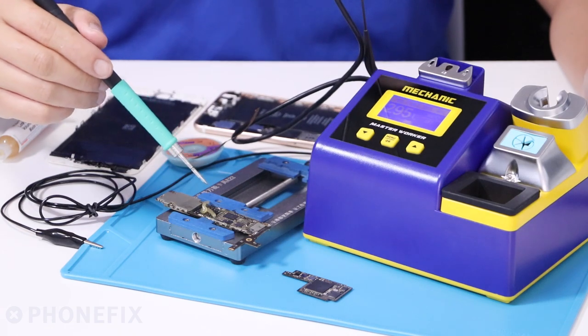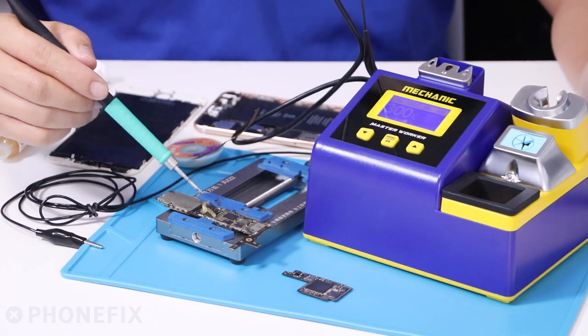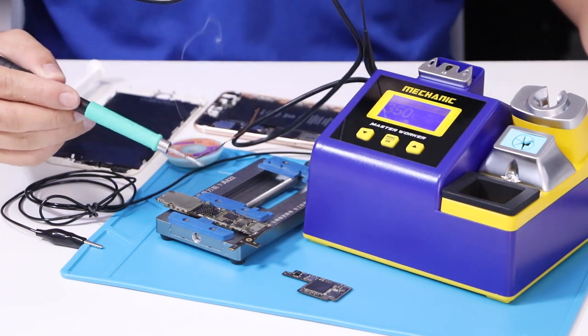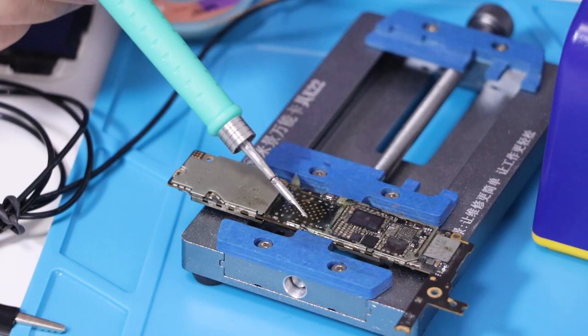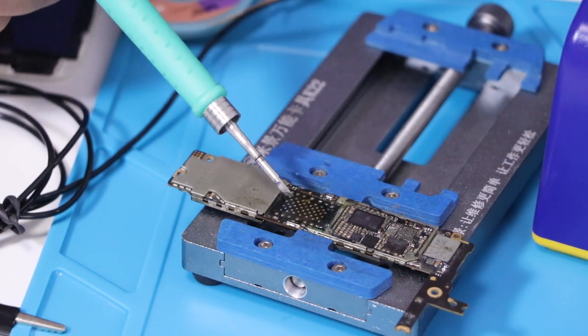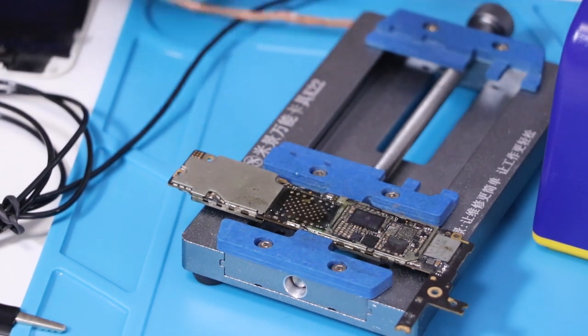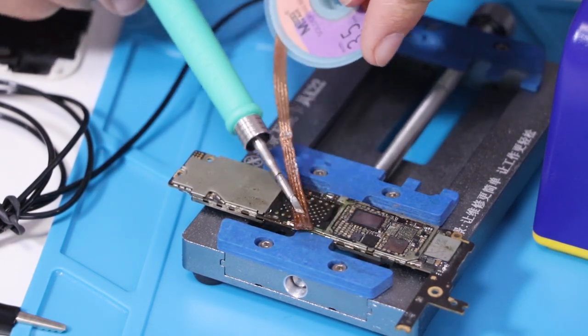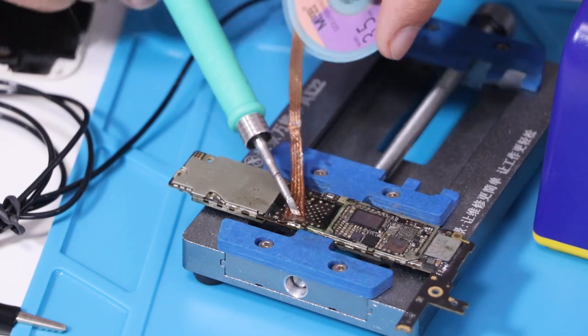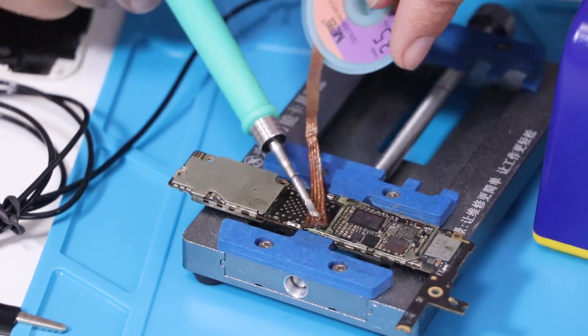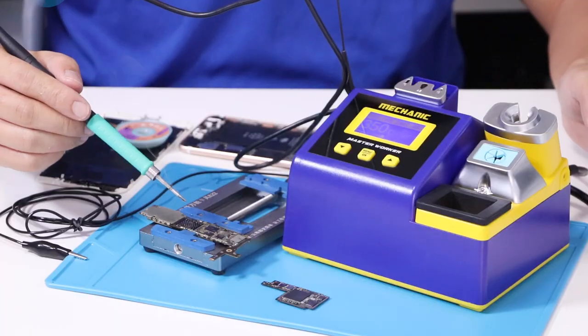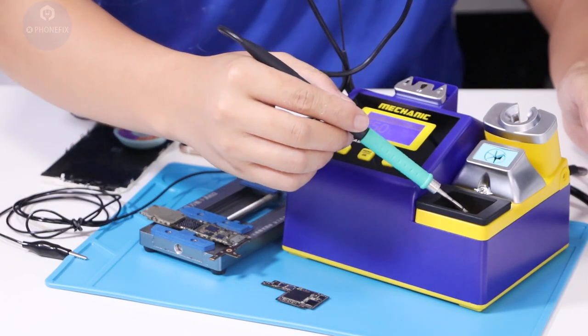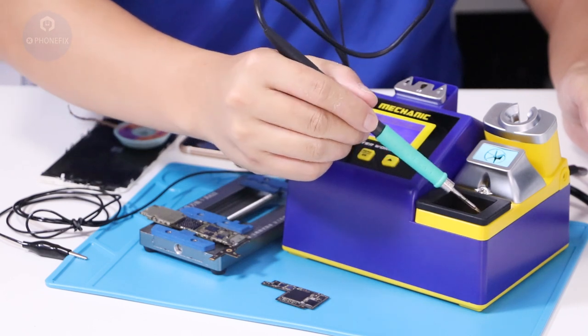Now let's review the effects of the solder station. When you finish the soldering, you can use a sponge and a metal ball to clean it. Now let's review it.